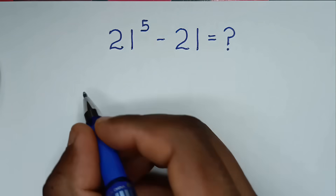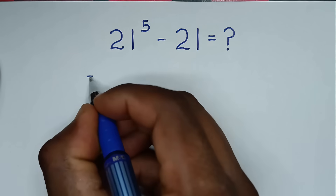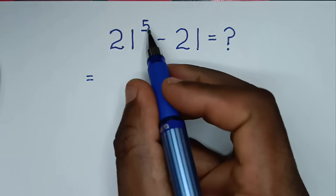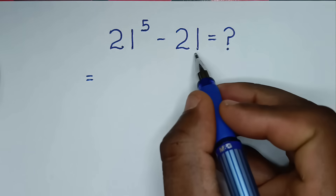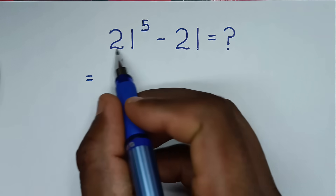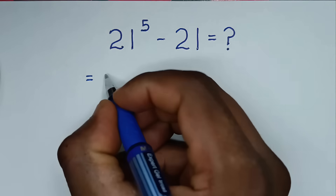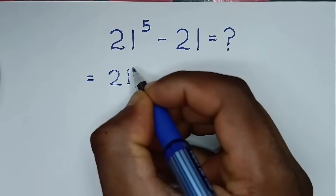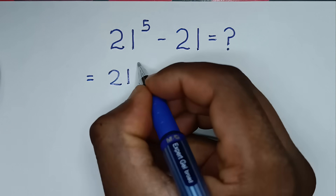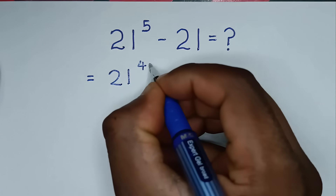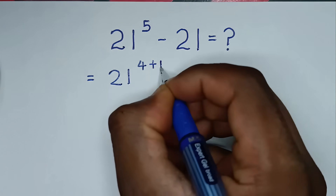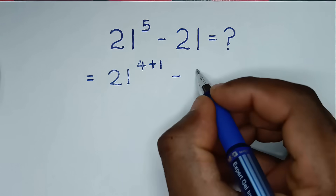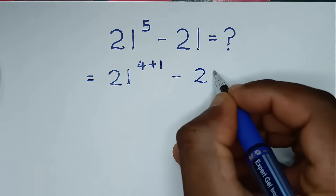It will be equal to: from here, 21 power 5, we rewrite the exponent — this is the same as 21 power 4 plus 1, then minus 21.